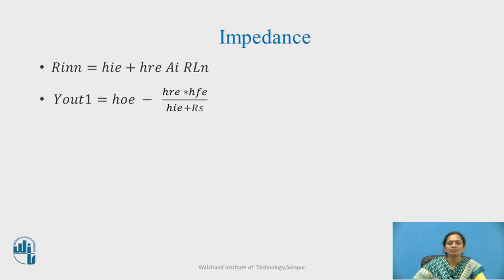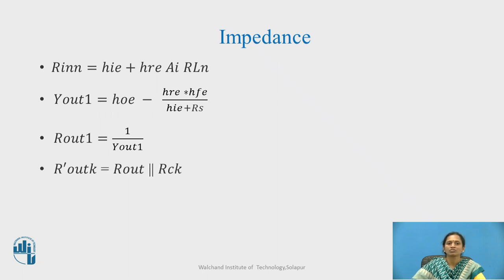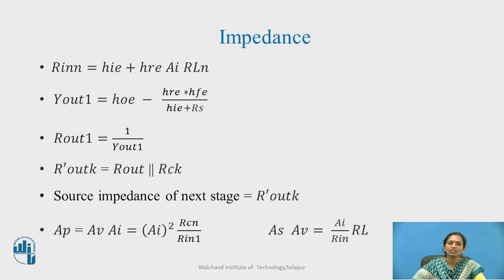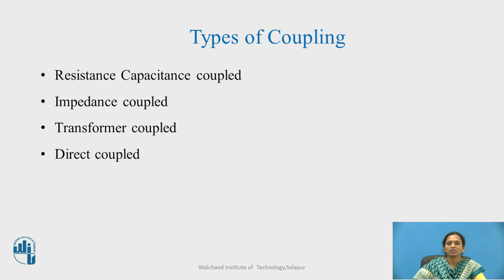For the impedance: Y_out equals H_O minus (H_R times H_F) divided by (R_S plus H_I), and the output impedance equals 1 by Y_out1. R_out_k' equals the parallel combination of R_out and R_{CK}, which will be the source impedance for the next stage. Power gain can be calculated as A_V times A_I, putting A_V equal to A_I times R_L upon R_I, where R_L is R_{CN} and R_I is R_{INN}. Types of coupling include resistor-capacitance coupling, impedance coupling, transformer coupling, and direct coupling.